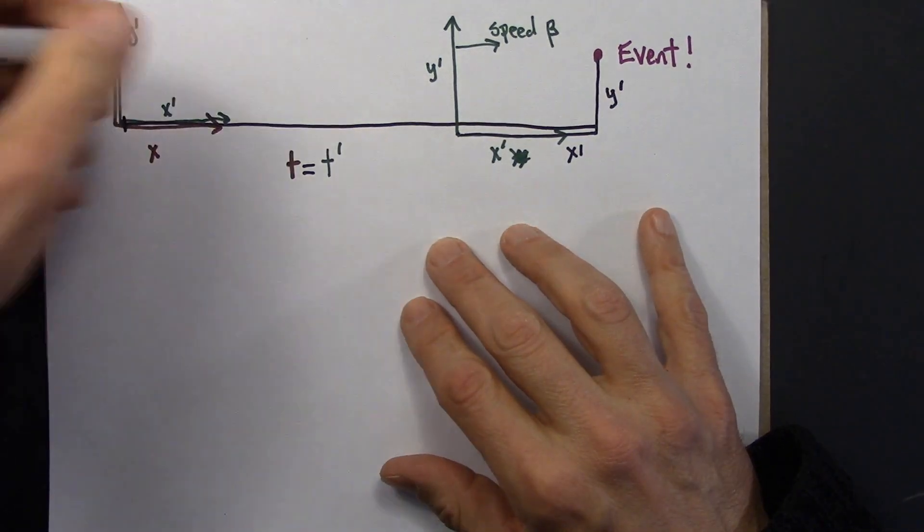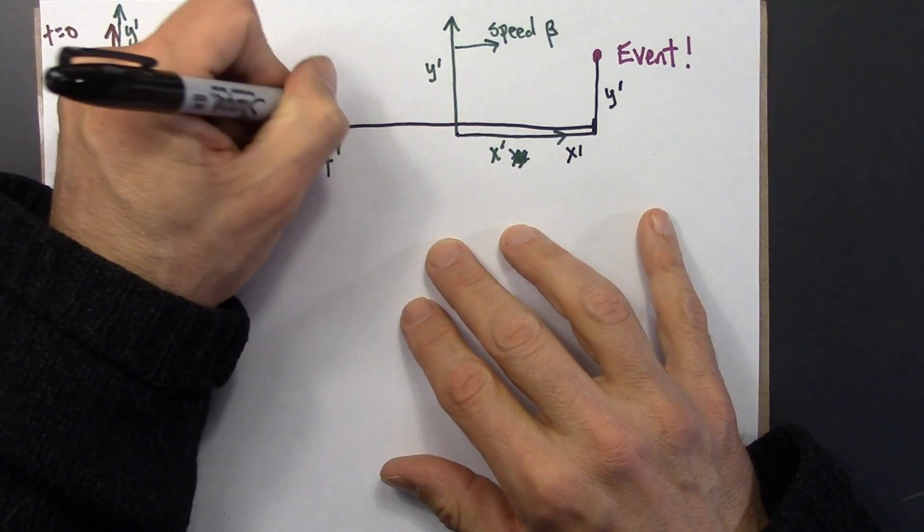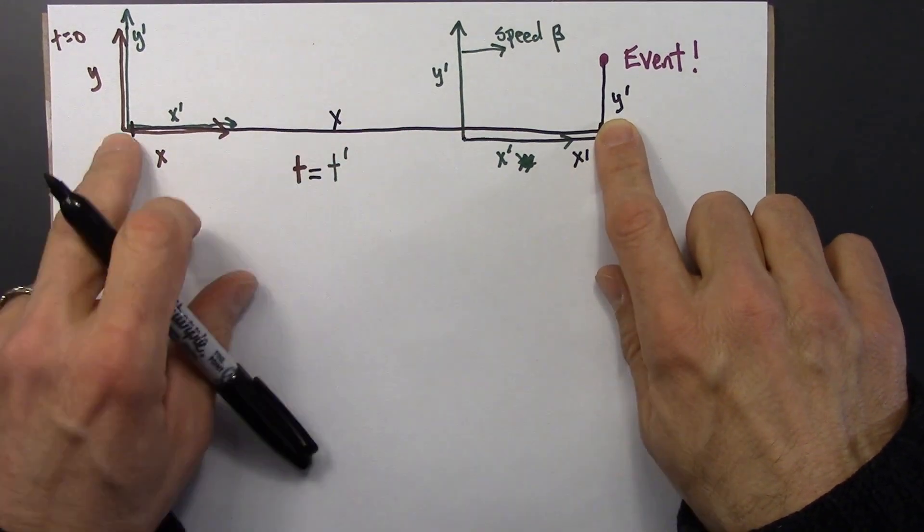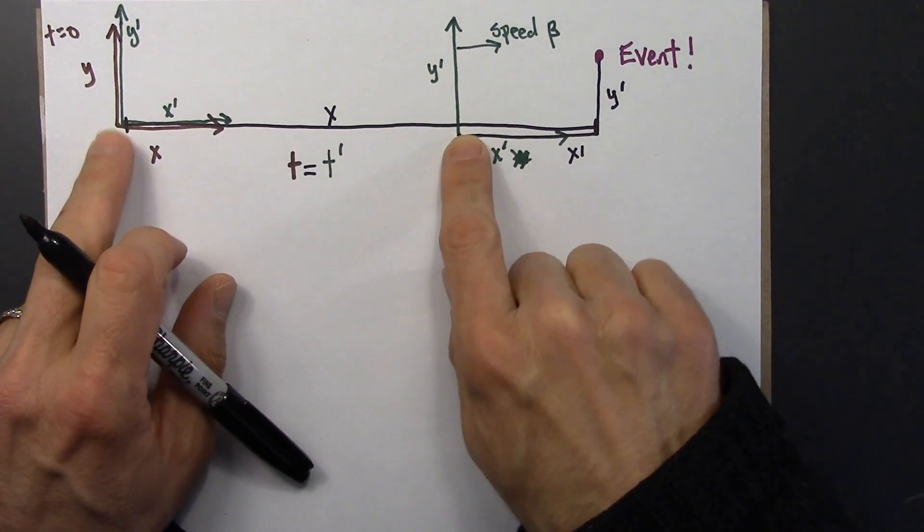Okay, so this here, that's x, and then this is x prime. And so they don't agree because the origins are at different locations.